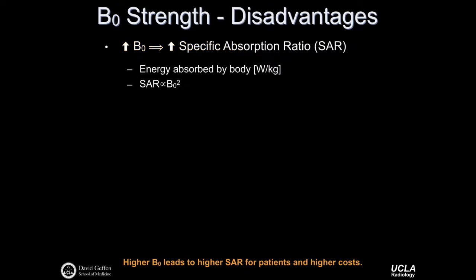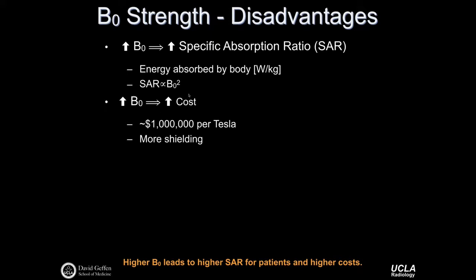Increasing B0 also has disadvantages. One is the associated increase in the specific absorption ratio (SAR), a number reflecting energy absorbed by the body measured in watts per kilogram. The deposition of RF energy needed to excite the spins contributes much more energy to heating the patient than to the excitation process itself. SAR is proportional to about B0 squared, leading to SAR limitations at higher field strengths. Increasing B0 also increases cost at about a million dollars per Tesla, requires more shielding, and makes siting high-field systems such as 7T quite costly.